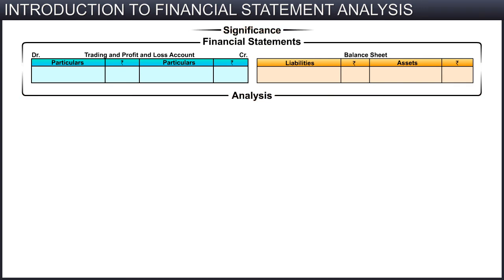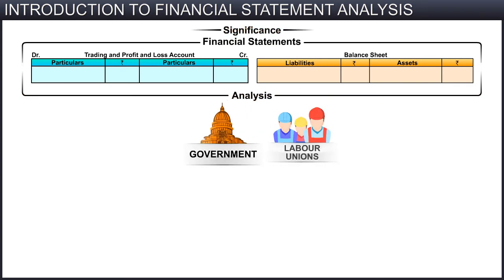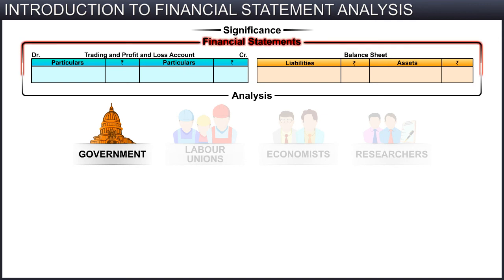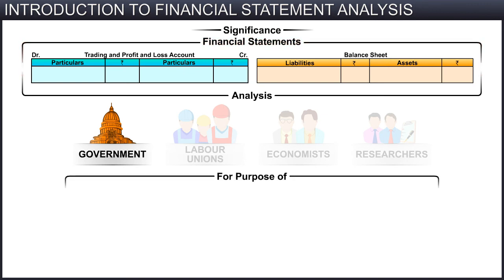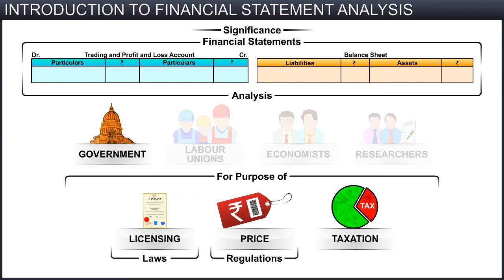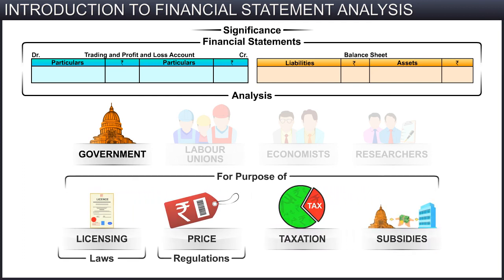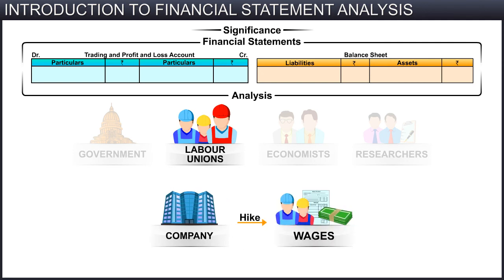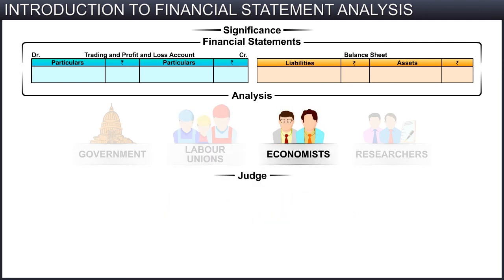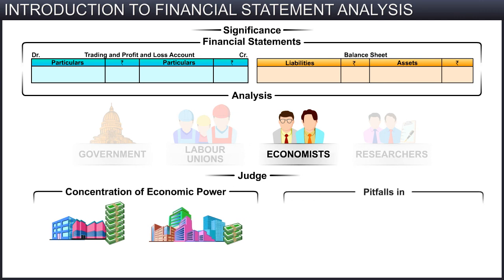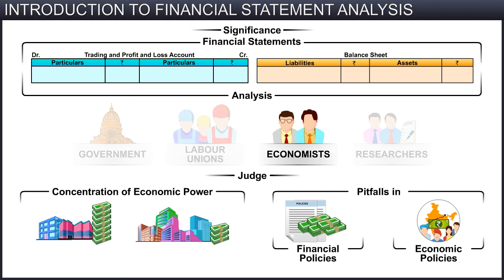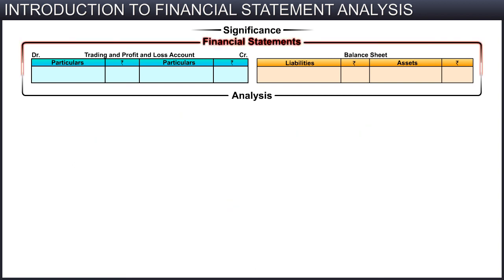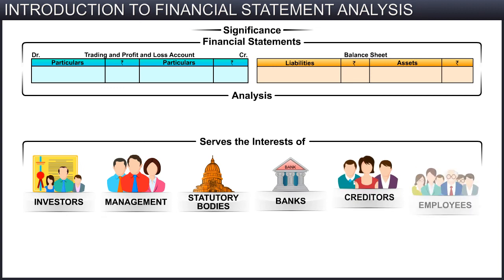Furthermore, financial analysis is significantly important to others like the government, labor unions, economists, and researchers. The government analyzes the financial statements of the corporate sector for the purpose of deciding on licensing laws, price regulations, taxation, subsidies, and more. Labor unions analyze the financial statements to see whether the company can afford to hike wages. Economists can judge the concentration of economic power and pitfalls in financial and economic policies, along with areas requiring policy changes in order to strengthen the corporate structure. So, financial statement analysis serves the needs and interests of many different stakeholders.